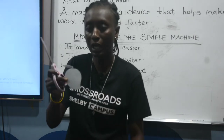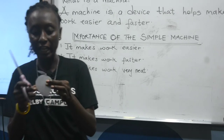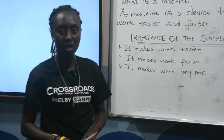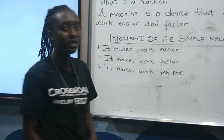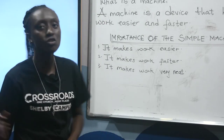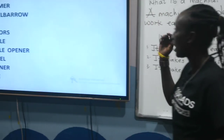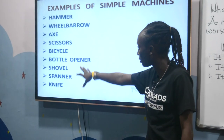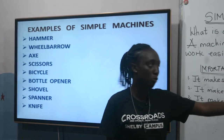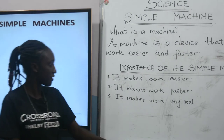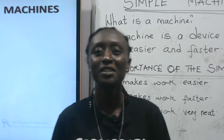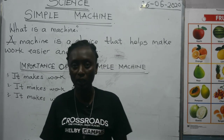With the simple machine, I was able to cut this apple easily, faster, and it looks very neat. So today we were able to know a little about a simple machine. We got to know that a machine is a device that helps make work easier and faster, and a simple machine is a machine that helps us to do work quite easier. We got to know some examples: hammer, wheelbarrow, axe, scissors, bicycle, bottle opener, shovel, spanner, and knife. And we got to know the importance of simple machines — it makes work easier, faster, and very neat. This brings us to the end of today's lesson. Make sure that you do exercise one, homework one. See you next time, bye!